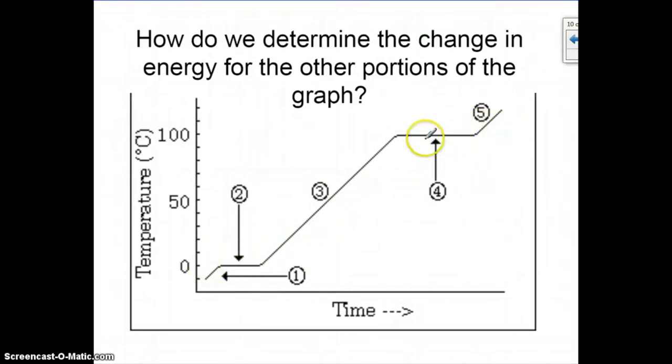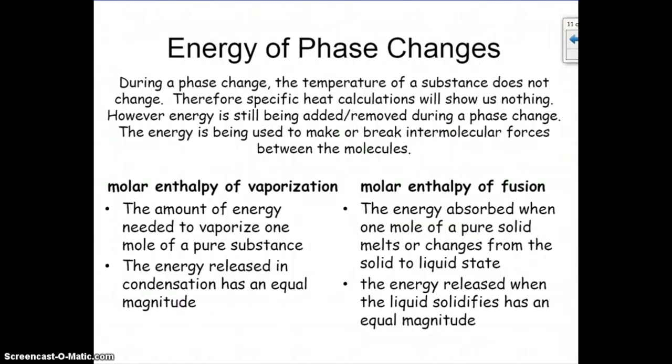Now on these flat regions of the graph, we're going to have to do something else. There is no change in temperature here, so delta T would be zero, so Q equals mc delta T will not help us. Plus we're going from one state to another, so we would have a hard time determining which specific heat value we should use. Should we use liquid water or should we use solid water?